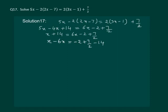So, now we have x minus 6x will give us minus 5x equal to let us take the LCM. We get minus 4 plus 7 minus 28. So, we have minus 5x equal to minus 25 by 2.